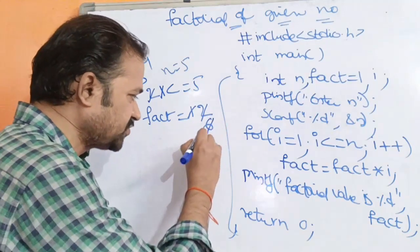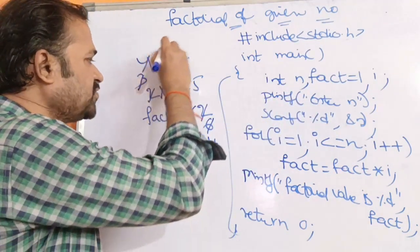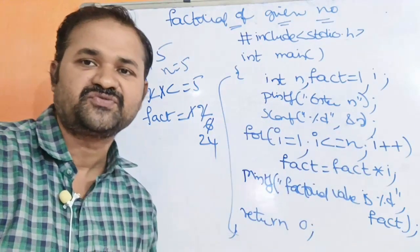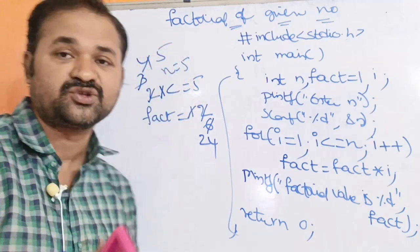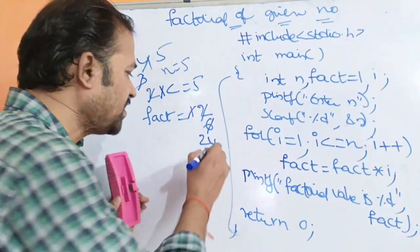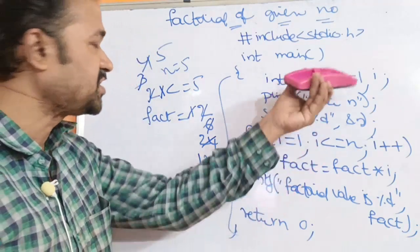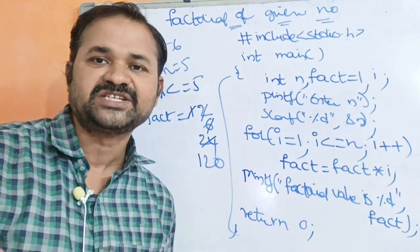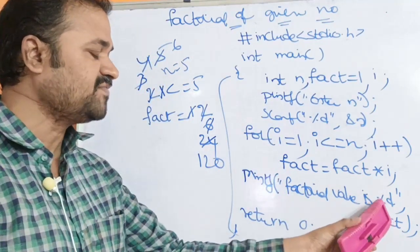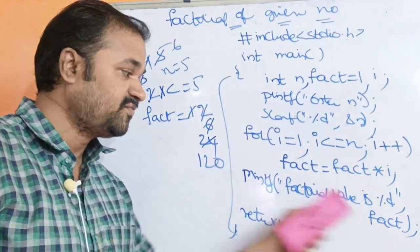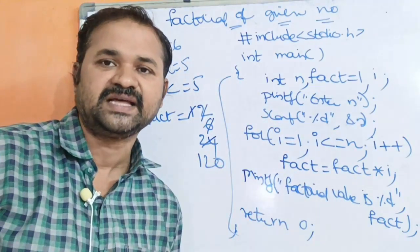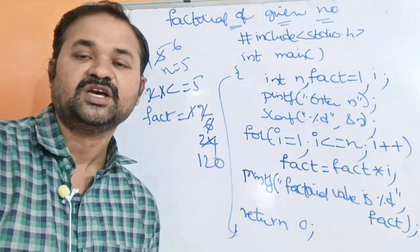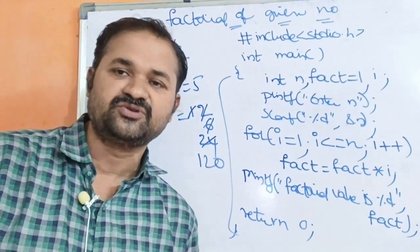i plus plus, i lo 5 avuthundi. 5 is less than or equal to 5 - condition true. fact is equal to fact into i - fact lo 24, i lo 5 - 24 into 5 anta 120. Fact lo 120 avuthundi. Next i plus plus, i lo 6 avuthundi. 6 is less than or equal to 5 - condition is false, so loop lo nchi bayta avuthundi. Factorial value is 120 - fact lo 120 hundi - so 120 print avuthundi. 5 factorial result 120.